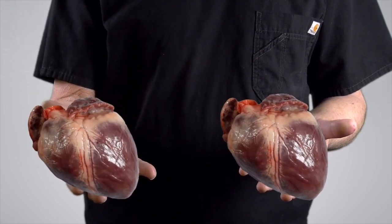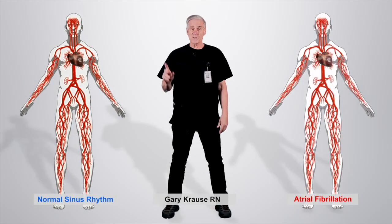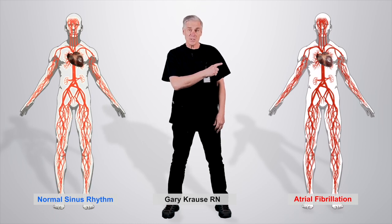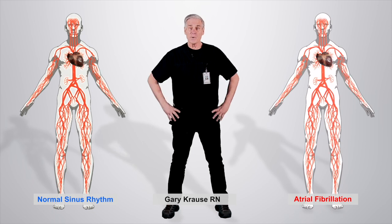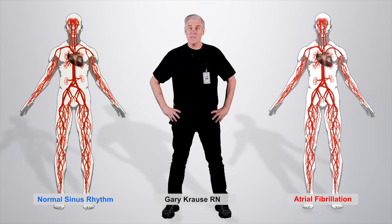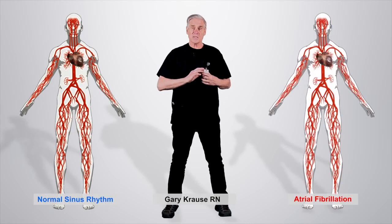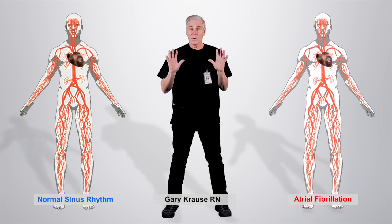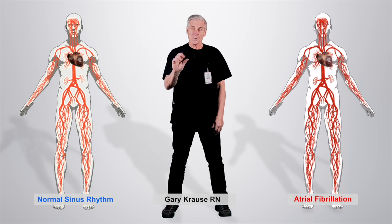This is a heart beating in a normal rhythm, and this is a heart beating in atrial fibrillation. Not knowing the difference between a normal heart rhythm — also referred to as normal sinus rhythm — compared to atrial fibrillation, also referred to as A-fib, can be devastating and affect your health. My name is Gary Krause. I've been a registered nurse with 32 years of experience in emergency and cardiac medicine with a specialty in EKG training. I'm the creator of the RCAD EKG badge and owner of EKG Concepts. Whether you're a lay person or medical professional, stay with me for the next few minutes and I will show you how untreated atrial fibrillation can increase your risk of stroke by 500 percent.